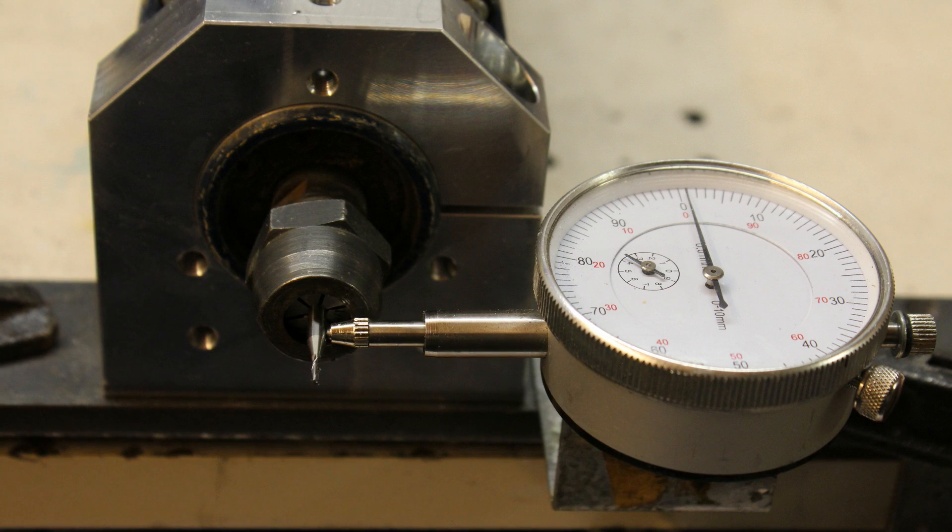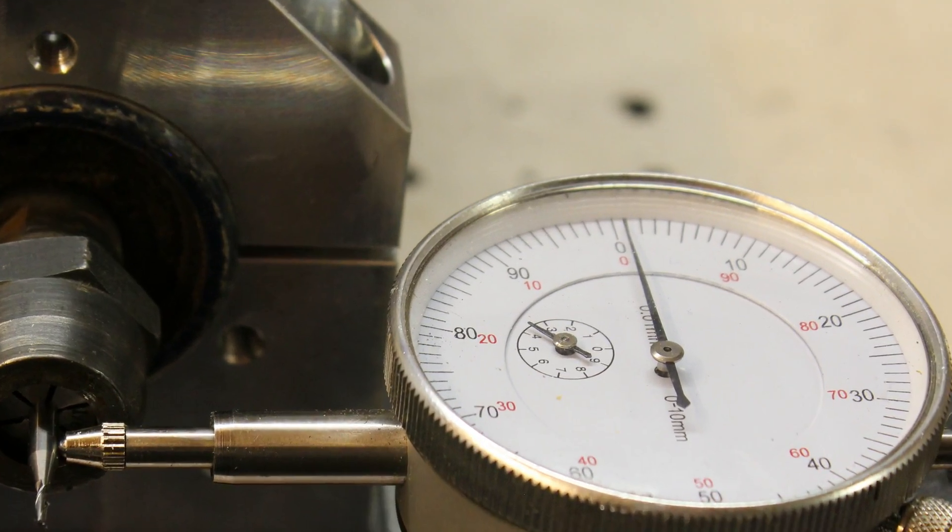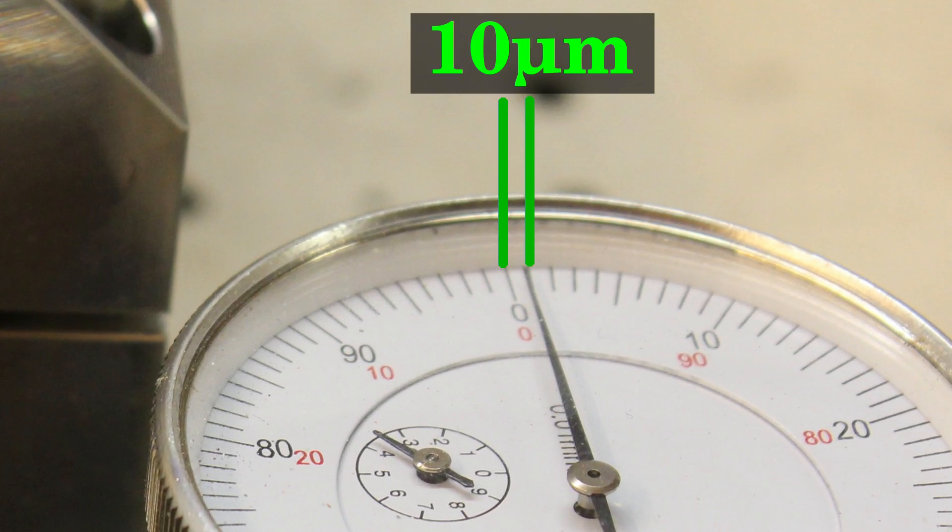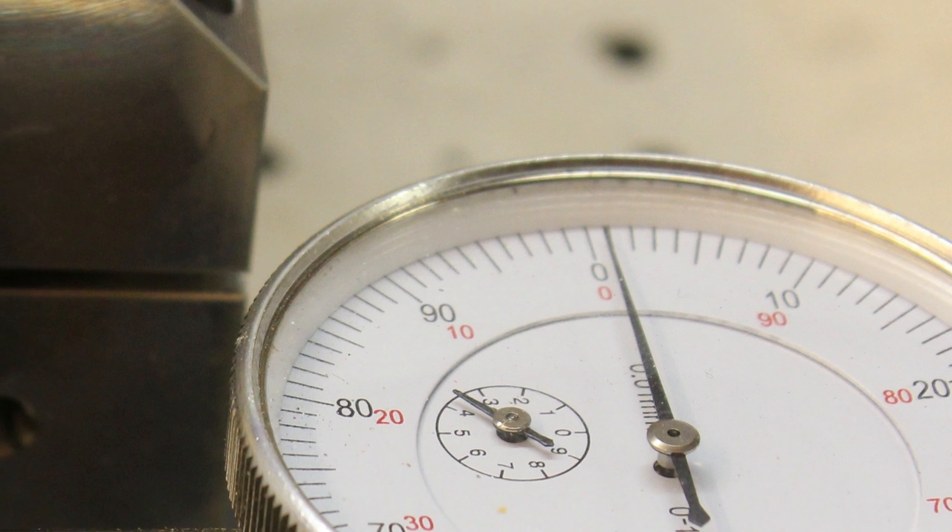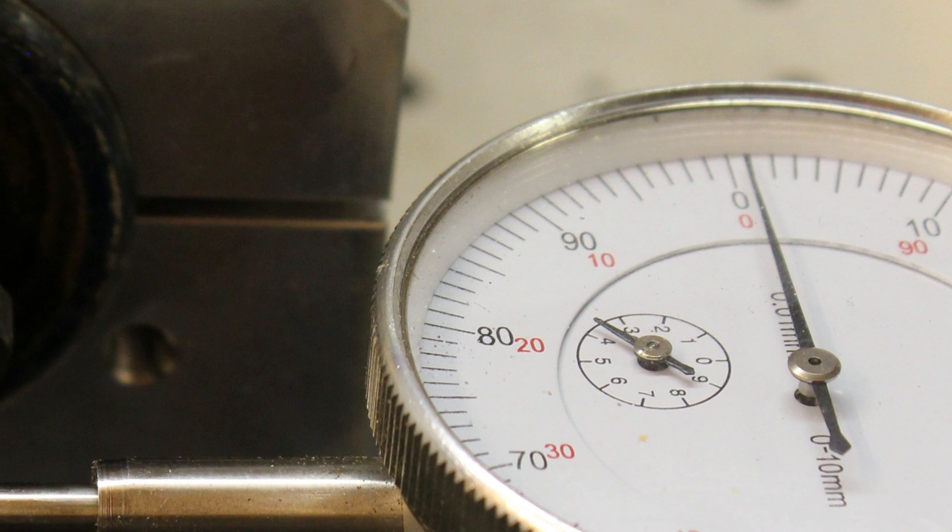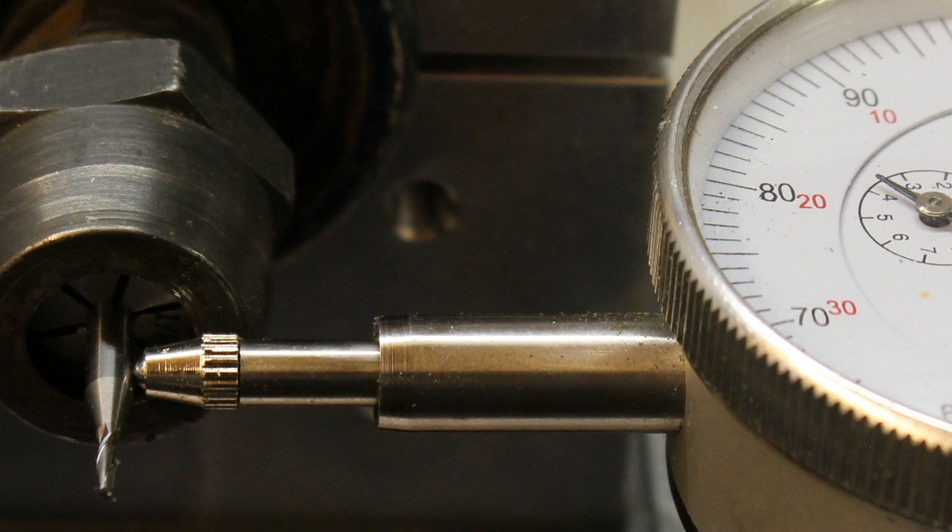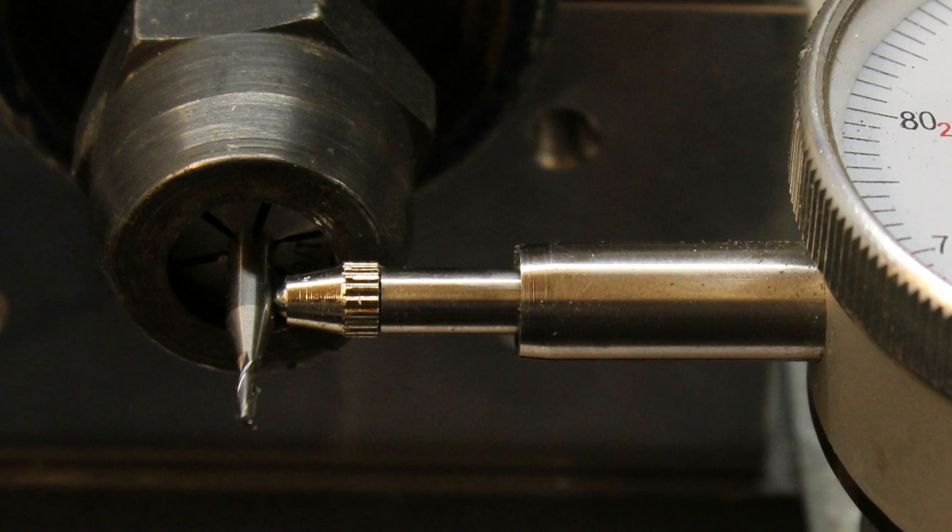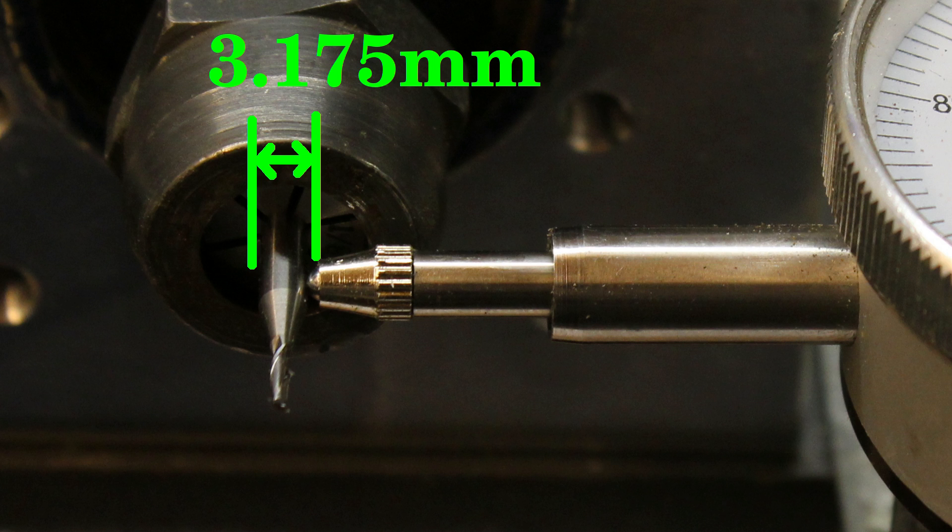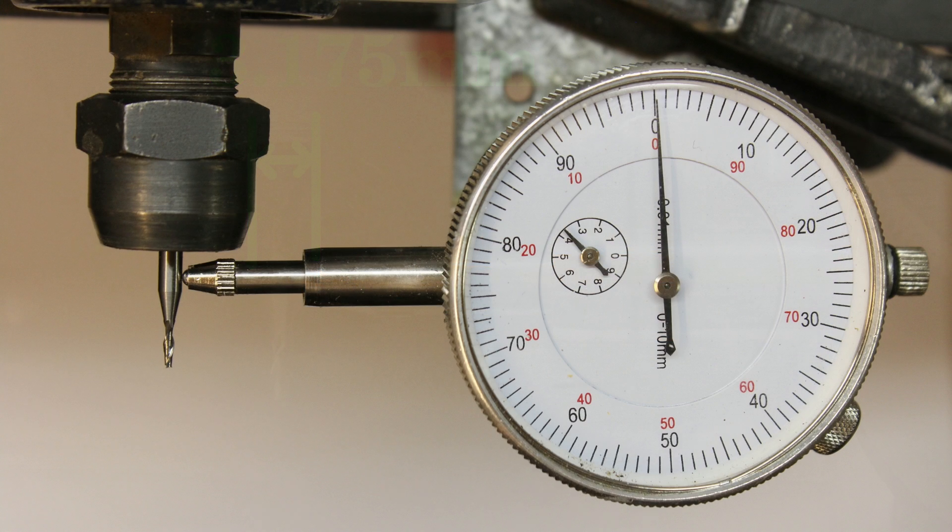The run out is an important factor for the quality of a machine. My measurement setup uses a dial indicator with one scale being 10 micrometers of linear movement. The tip of the indicator touches the 3.175mm shaft of a 1.5mm milling cutter. 3.175mm are one eighth of an inch. The tip of the dial indicator is placed as close as possible to the collet.